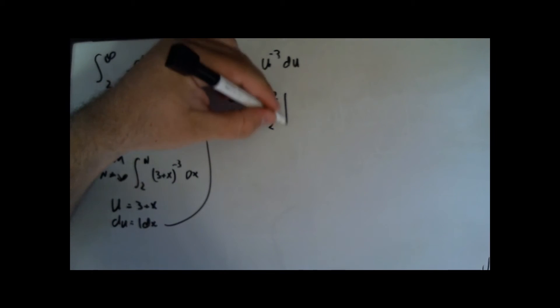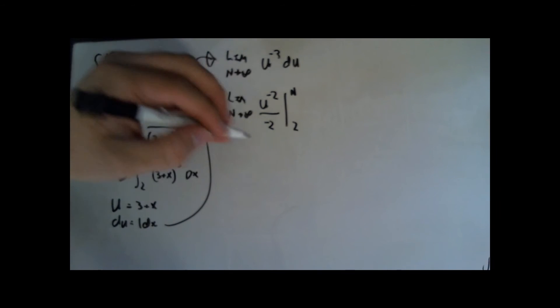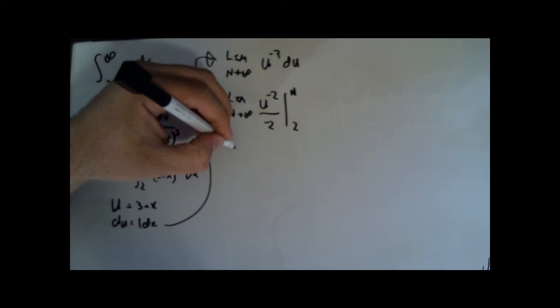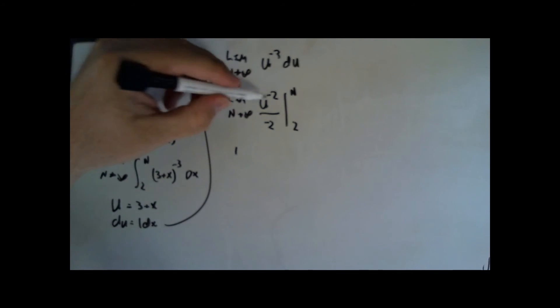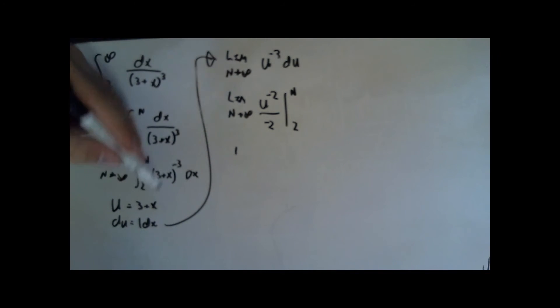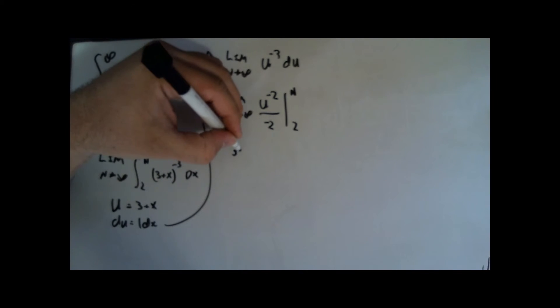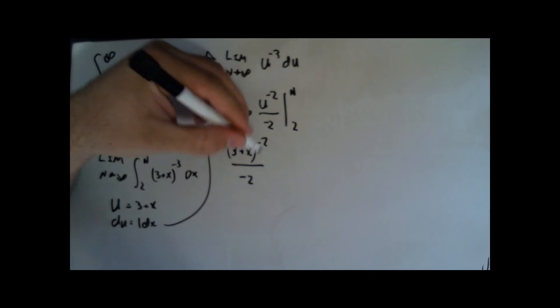Now, the limit of n approaching infinity of u to the negative 2 divided by negative 2 from 2 to n. Then go ahead and plug in our limits of integration, and I've got to substitute back in my u value, u being 3 plus x. 3 plus x to the negative 2 divided by negative 2.